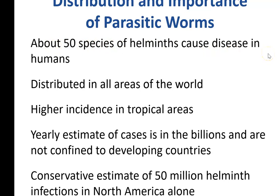There are about 50 species of helminths that cause disease in the world. A lot of them are found in higher abundance in the tropical regions of the world. People still die from helminth infections, so even though it's not something we worry about too much in the US, people travel all over the world and come home with these things. We think there are at least 50 million helminth infections in North America every year.